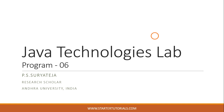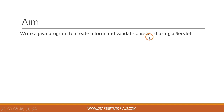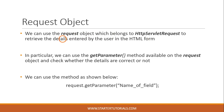Welcome to this video series on Java Technologies Lab. Today we are going to look at the sixth program. The aim of this program is to create a Java application with an HTML form where the user enters a username and password, and when the user clicks on the submit button, we send the username and password to the servlet where we validate them.